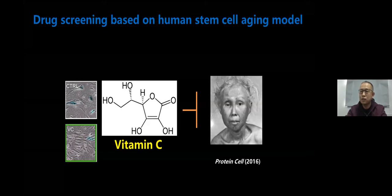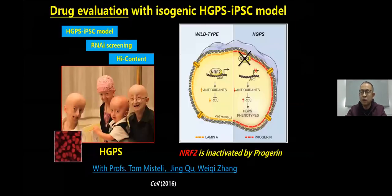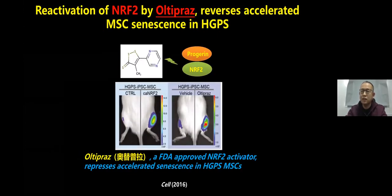Vitamin C shows the most obvious effect of delaying human mesenchymal stem cell senescence. It's worth noting that vitamin C is not only an antioxidant, but also an epigenetic regulator. We also established an iPSC stem cell model of HGPS and used it to reveal that NRF2, an antioxidant transcription factor, is inactivated by mutant Lamin A, which leads to cellular senescence. Through drug screening, we found that reactivation of NRF2 by RT-PRIS, an FDA-approved NRF2 activator, inhibits accelerated senescence of human mesenchymal stem cells.